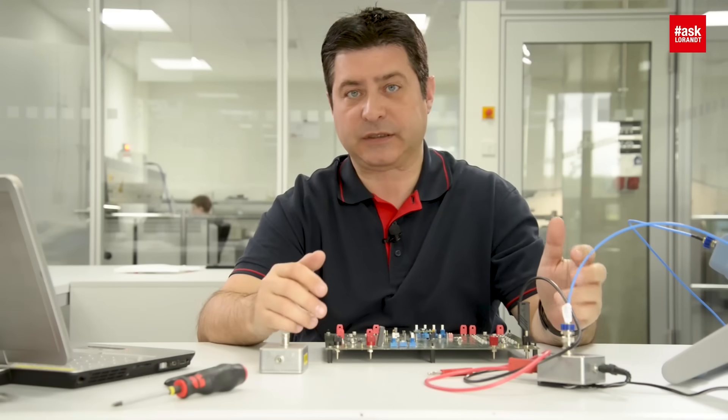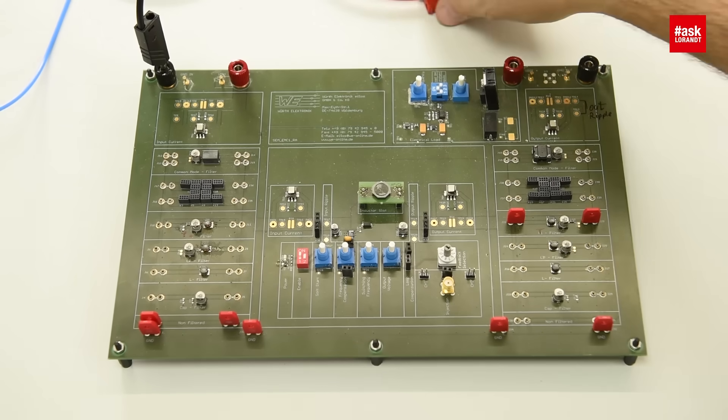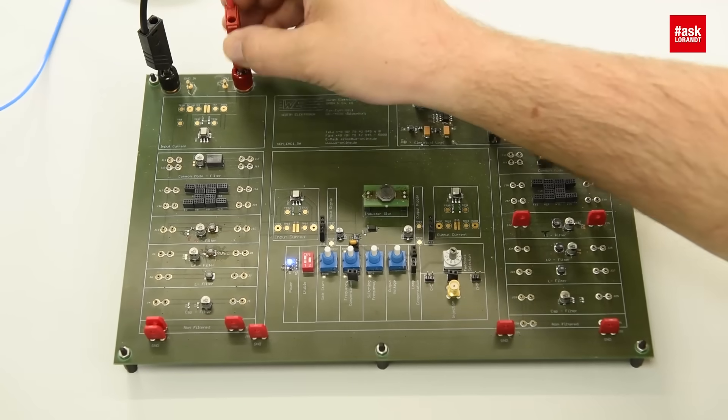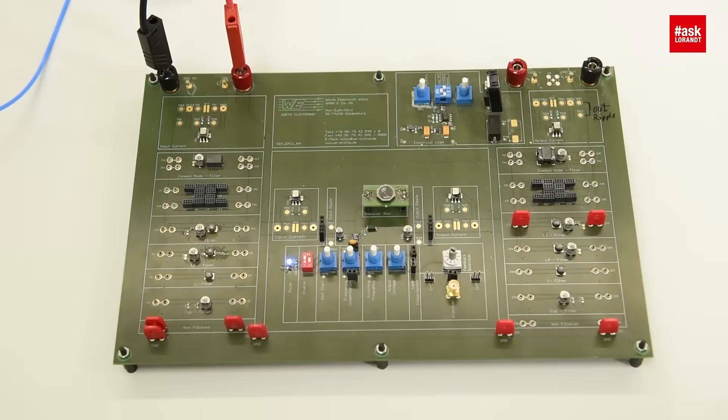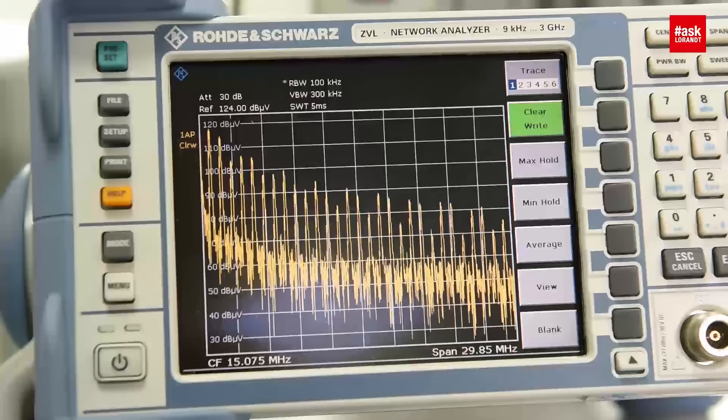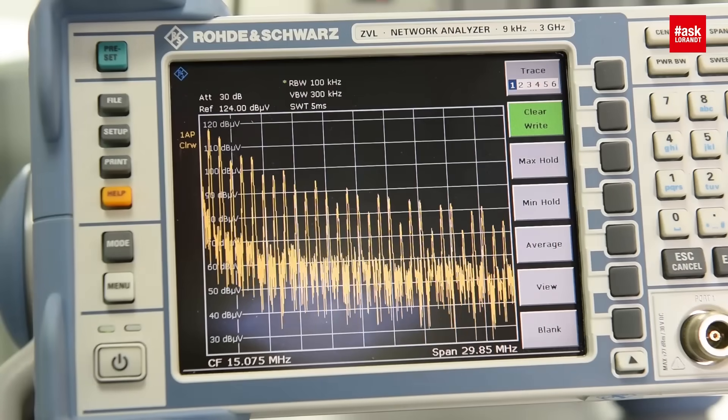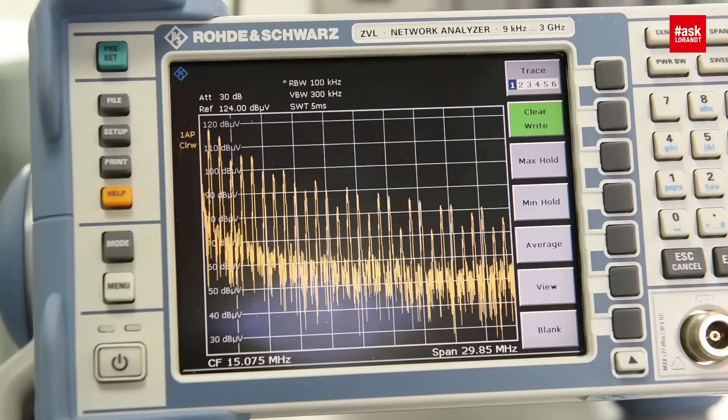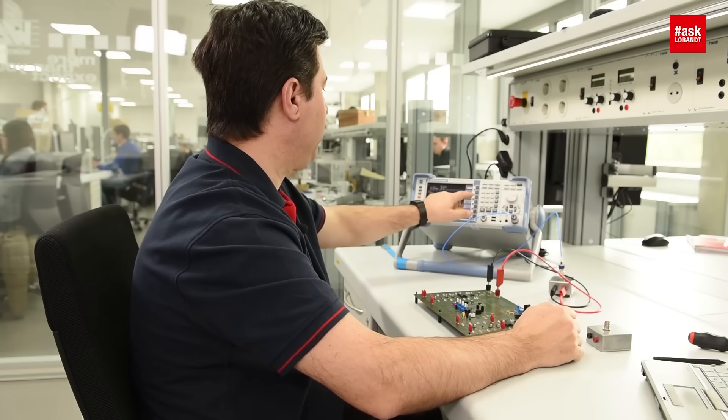Now we want to see what this LISN does in operating function. I will connect my DC-DC converter, and as you can see here in this network analyzer, right now it's working as a spectrum analyzer, I will measure the maximum hold of the noise generated from this DC-DC converter.